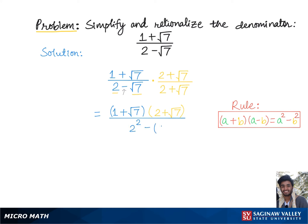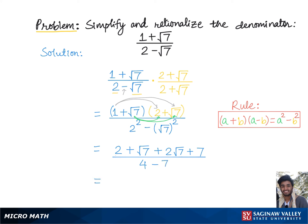According to the difference of squares rule, we get 2 squared minus √7 squared in the denominator. Expanding the numerator: 1 times 2 is 2, plus 1 times √7 is √7, plus √7 times 2 is 2√7, plus √7 times √7 is √7 squared, which is simply 7.